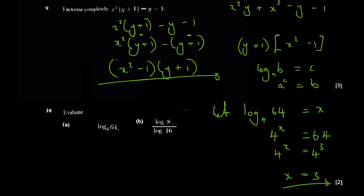Most students won't immediately know that 64 is 4 cubed. That's fine — here's how you work it out if you don't know.